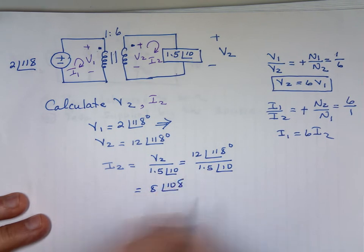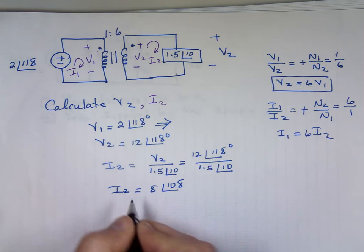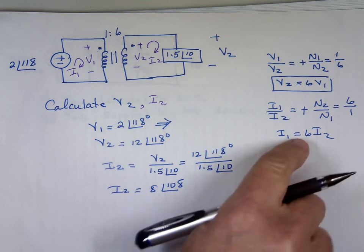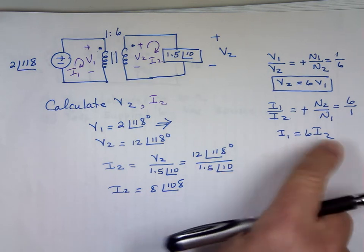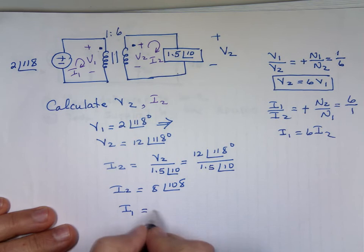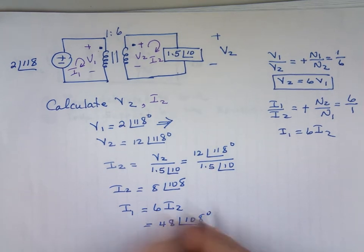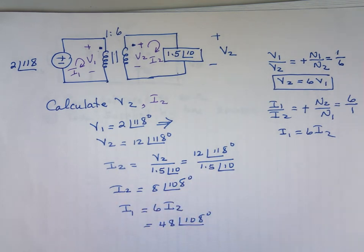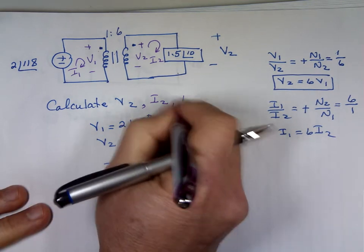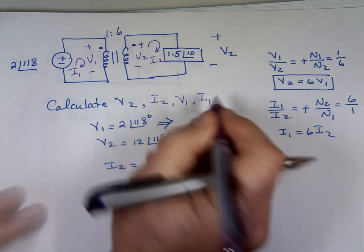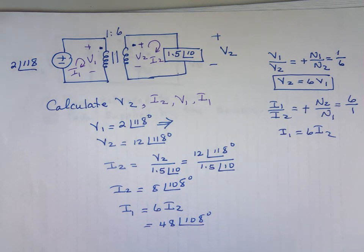I don't even have to do that. Maybe I'll find it but I didn't have to do it because if you want to just find I sub 2 from this, I sub 2 is equal to, we know the voltage here, that's v2. We know what that impedance is, so it's v2 divided by 1.5 angle 10, which is 12 angle 118 divided by 1.5 angle 10, and that's 8 angle 108. The problem is not really asking for I sub 1, but since I'm having fun, let me find I sub 1. I sub 1 here is equal to 6 times I sub 2, so take this one multiplied by 6, and that's 48 angle 108.